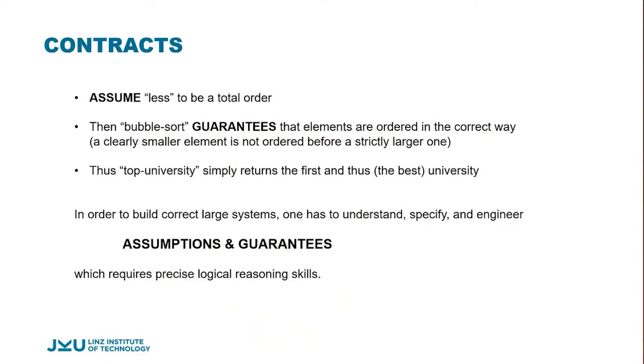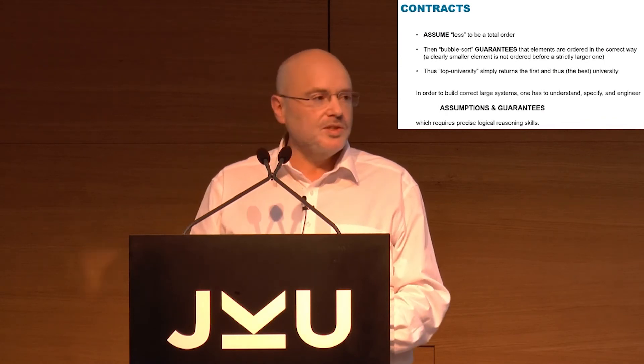What does this teach us? In computer science, one of the most important concepts is abstraction, or contracts. Components have contracts: an assumption about inputs and a guarantee about outputs. In our example, the assumption was that 'less than' is a total linear order — which wasn't true for the first buggy database. The bubble sort routine guarantees a sorted result, but the 'top university' function used it in the wrong direction. Fix both bugs and you get the right answer.